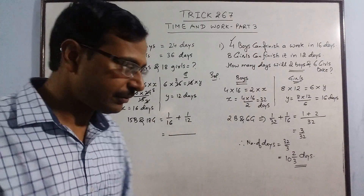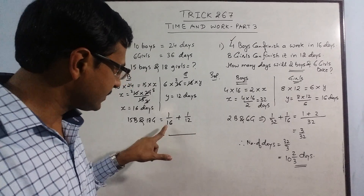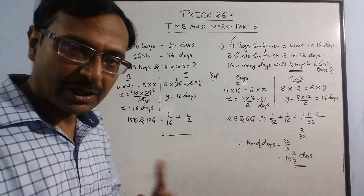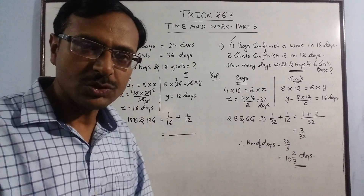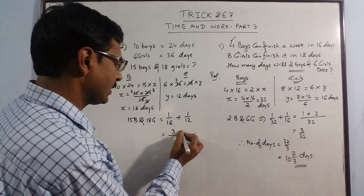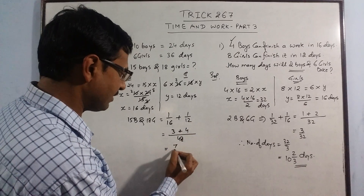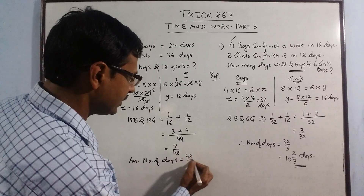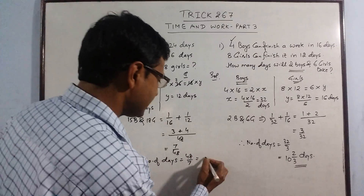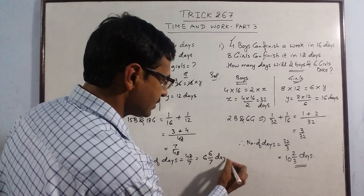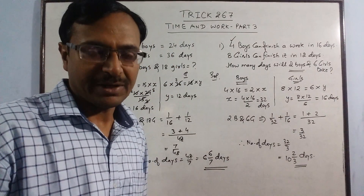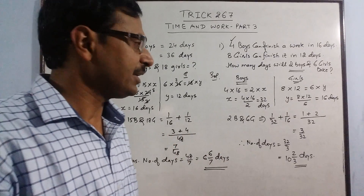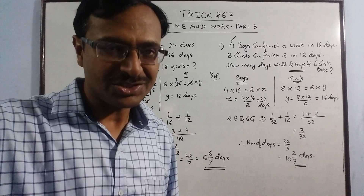Now 15 boys and 18 girls together: take reciprocals, 1/16 + 1/12. LCM of 16 and 12 is 48. So 3/48 + 4/48 = 7/48. Taking the reciprocal gives 48/7, which as a mixed fraction is 6 and 6/7 days — the final answer. These kinds of problems are very prevalent in exams and you cannot afford to leave them. If you like it, share and subscribe to the channel.